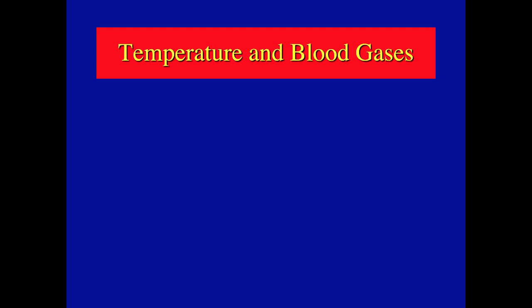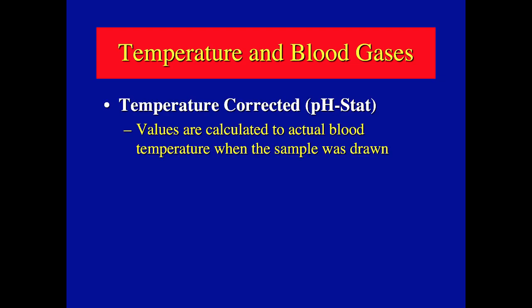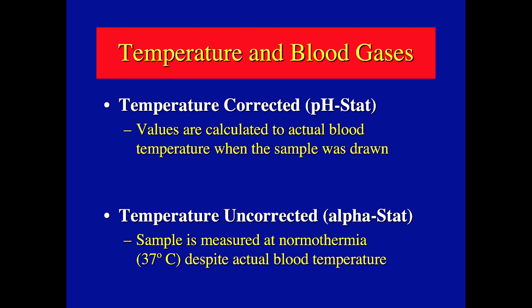There are two things we can do with temperature and blood gases. We can temperature correct the blood gases — measuring actual pH, PCO2, and PO2 at the actual temperature — that's pH stat. Remember, blood gas machines are programmed for normothermia and will measure blood gases at 37 degrees regardless of actual blood temperature. Or we can do temperature uncorrected — that's alpha stat, where the sample is measured at normothermia despite the actual blood temperature.